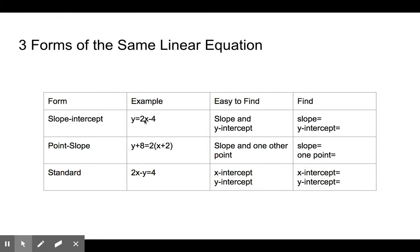With slope-intercept form, we're able to look at an equation and it's really easy to find the slope and the y-intercept. The slope is the coefficient of the x-term, so in this case the slope is equal to 2. The y-intercept is the constant term, here minus 4. Very easy to find the slope and y-intercept.